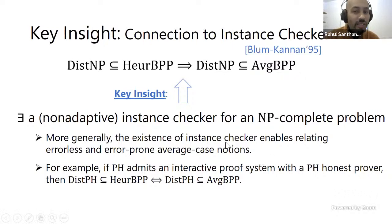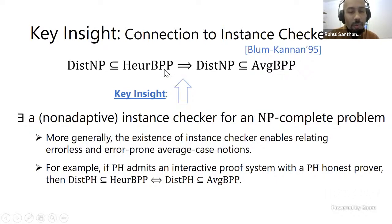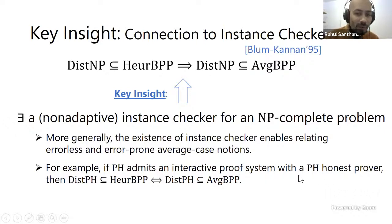We show that if you have an instance checker for an NP-complete problem — which is a longstanding open question in complexity theory — then error-prone heuristics do imply errorless heuristics for NP. For example, if pH admits an interactive proof system with a pH-honest prover, then that implies a certain kind of instance checkability, which implies a connection for distributional pH. The current best result is that you have interactive proofs with honest provers in #P.